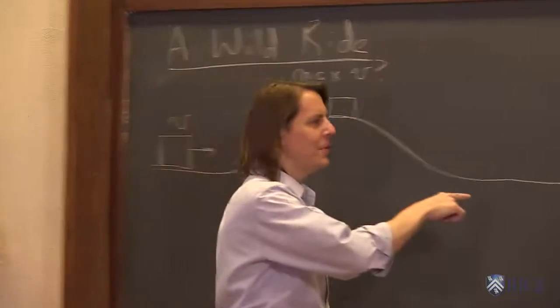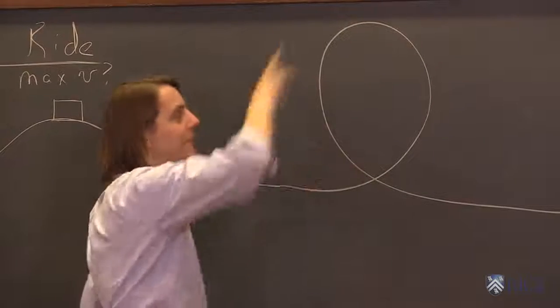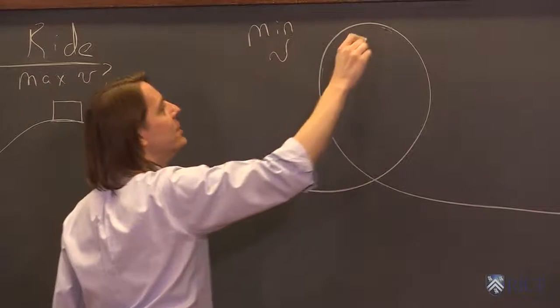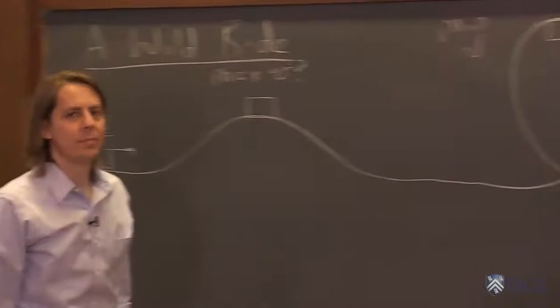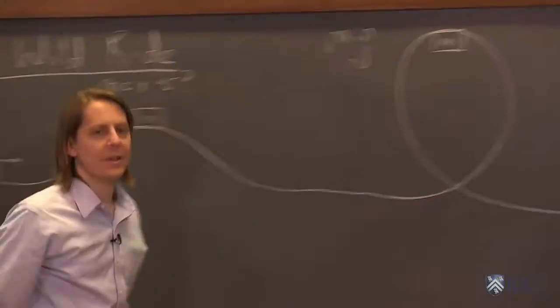And then on a loop, if you think about a loop, if you go too slow you might get to here and just fall. You have to go really fast to make it around the loop. So here we want to know what is the minimum speed we have to go to make it through that loop if this is our mass of our car.